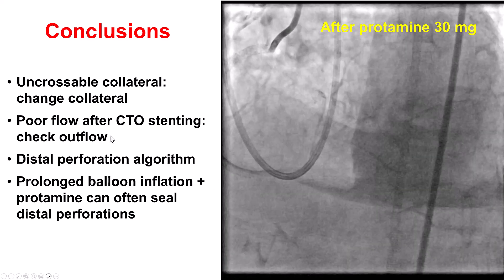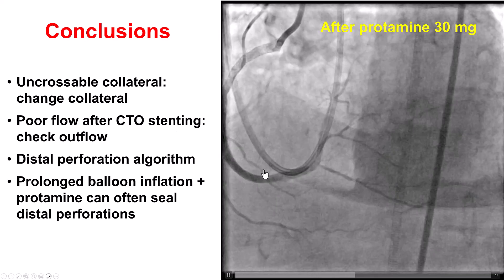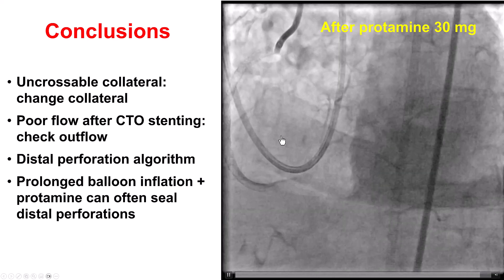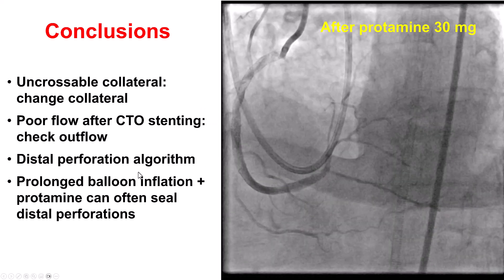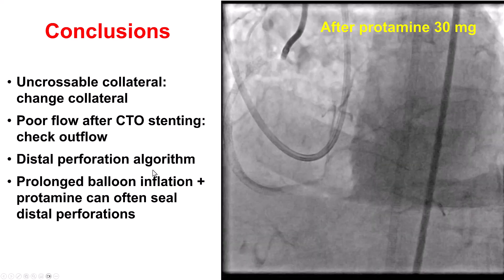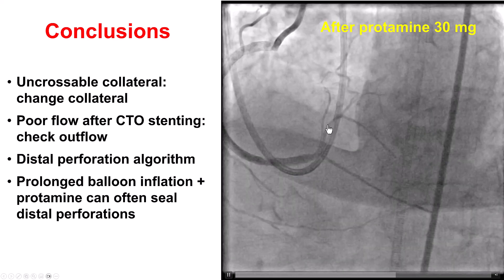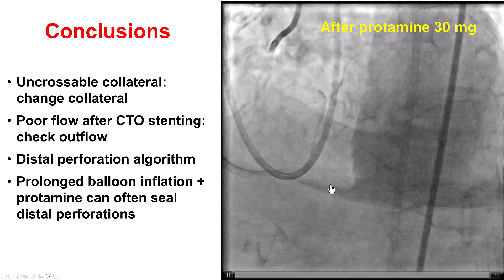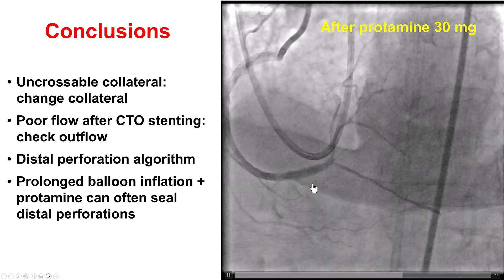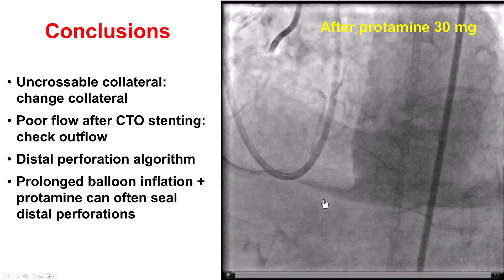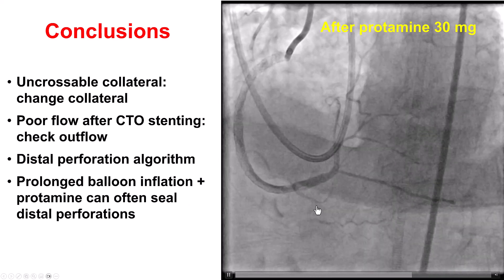The second lesson is troubleshooting poor flow after CTO stenting. In our case, there was likely dissection distal to the stent that was treated with balloon angioplasty. We rewired the posterolateral with a dual-lumen microcatheter and a polymer-jacketed wire, but the polymer-jacketed wire caused a small vessel perforation. Prolonged balloon inflation improved it with no pericardial effusion. We almost placed a coil but had difficulty getting into the perforated branch. Eventually we removed the equipment, gave protamine, and that resulted in sealing of the perforation. The patient had an uneventful post-procedural course.